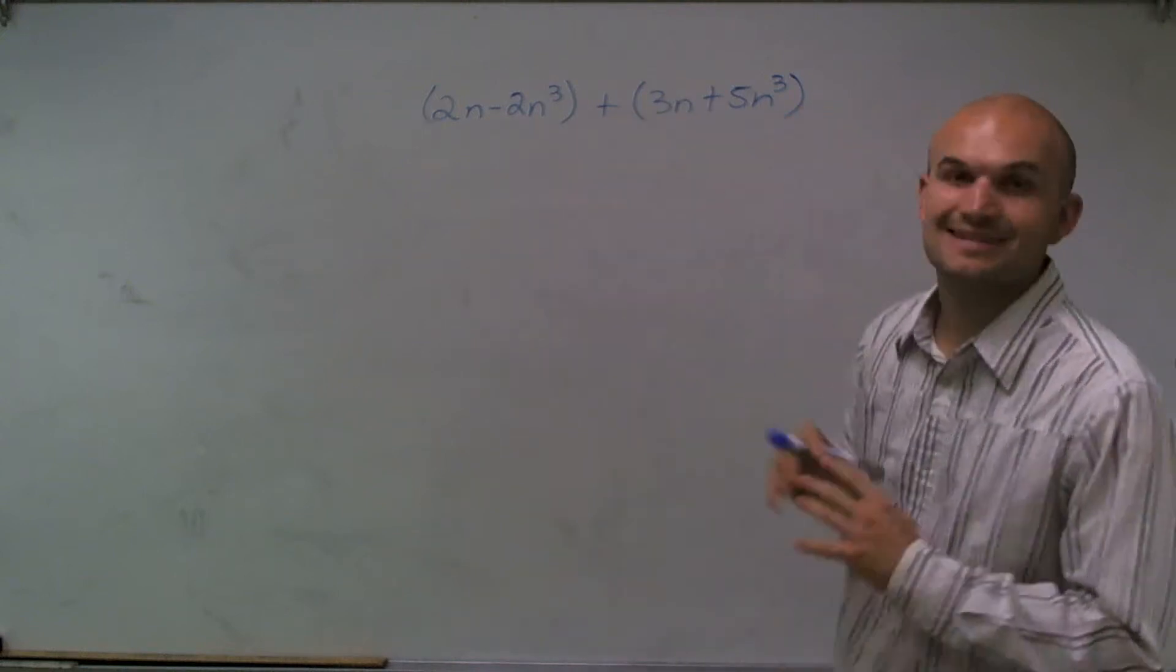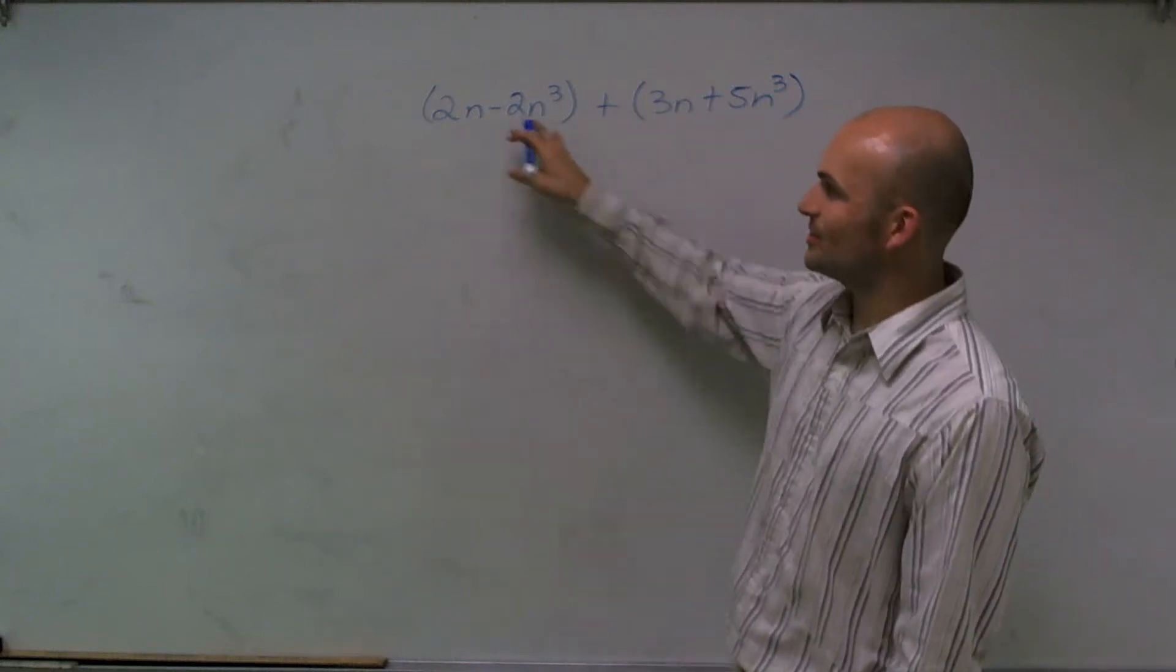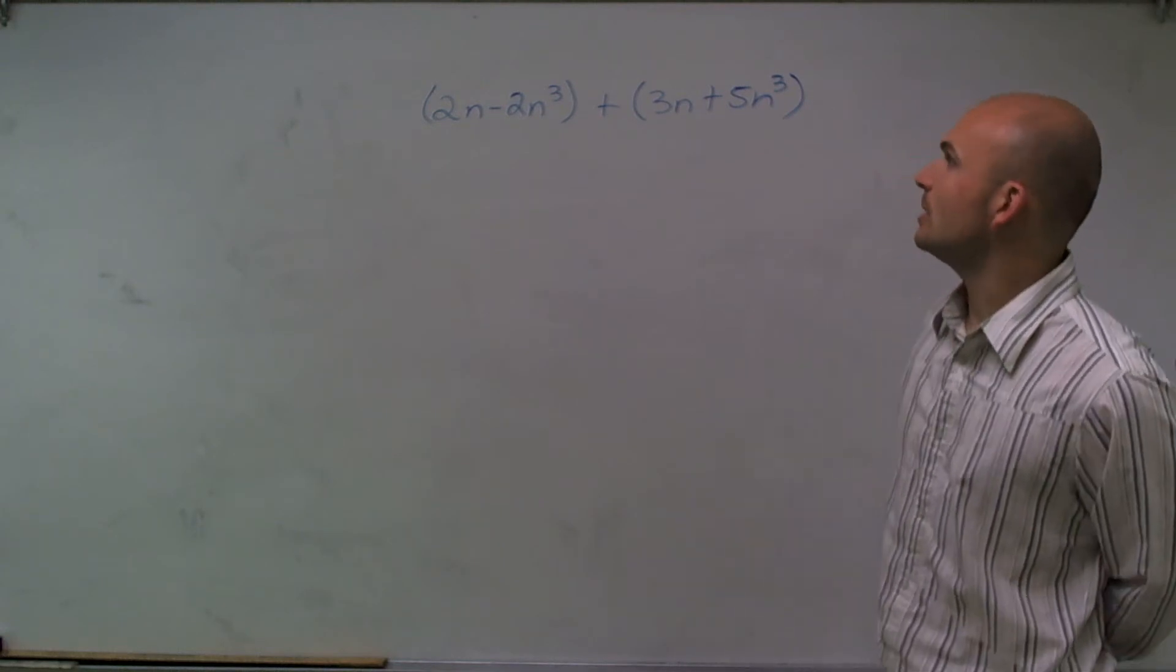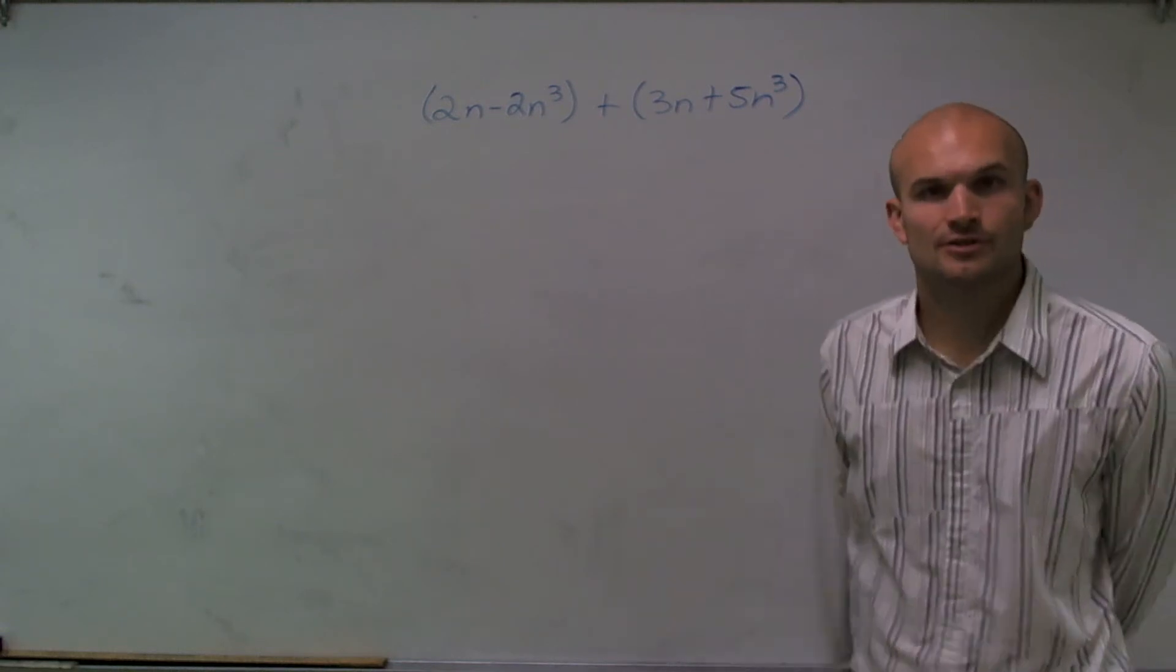Welcome. What I want to do today is show you how to add two polynomials. So the first polynomial I have is 2n minus 2n cubed plus 3n plus 5n cubed.